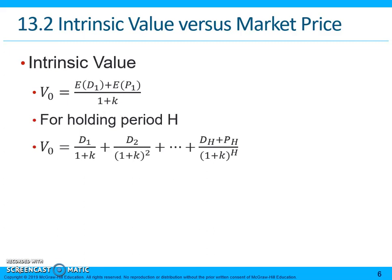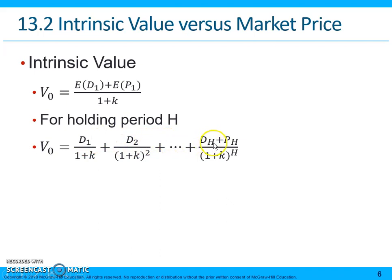Intrinsic value V0 — we also use P0, and P0 and V0 are interchangeable. In the most basic formula: V0 equals the expected dividend plus the expected price, divided by (1 + k). For a longer holding period, V0 is the present value of all dividends received, plus the dividend and price in the final period divided by (1 + r) raised to the power of the number of periods.